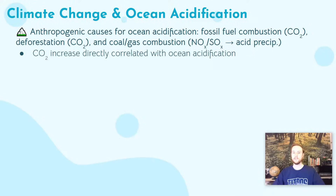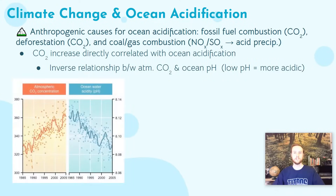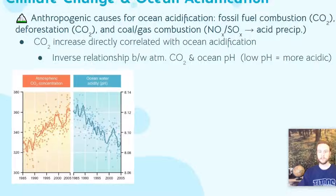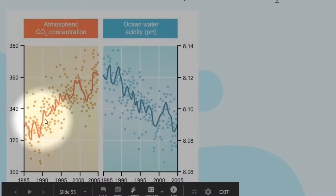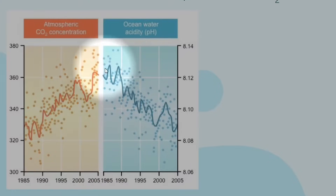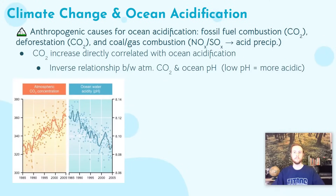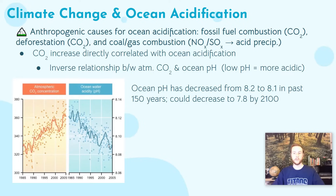This leads to a direct correlation between ocean acidification and atmospheric CO2 levels. Looking at historical data, we see an inverse relationship between ocean pH — remember, lower pH means more acidic — and CO2 concentration in the atmosphere. From 1985 to 2005, CO2 in the atmosphere steadily increased while ocean pH steadily decreased. Already in the past 150 years, the ocean's average pH has decreased from 8.2 to 8.1, and it's projected to potentially decrease as low as 7.8 by 2100 — with serious consequences for shell-dependent marine life.